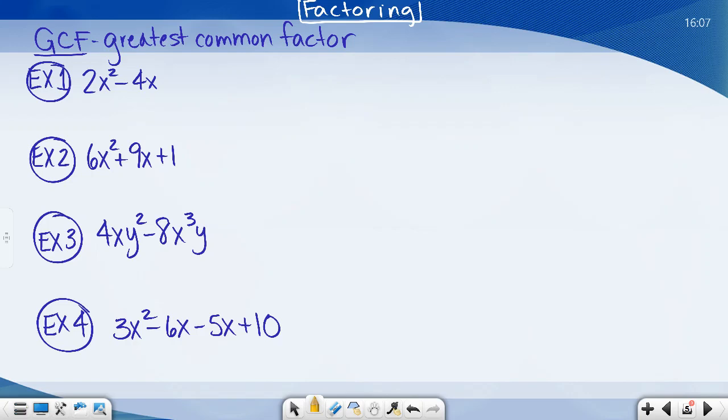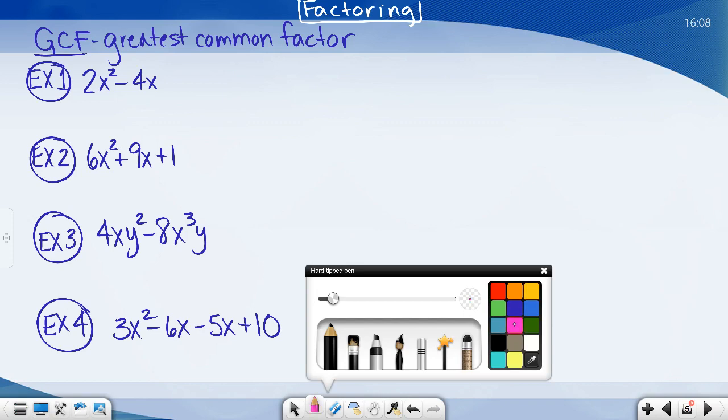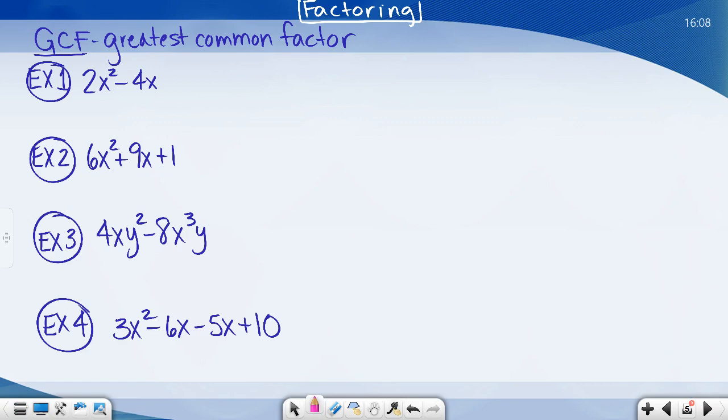So let's look at these four examples. The greatest common factor is the greatest value that is a factor—remember, factor means multiply—that divides evenly into the group of terms you have in your expression. Notice all four of these are expressions because they're not equations. Equations have an equality of some sort. These are just expressions, so we're going to simplify each by taking out the greatest common factor.